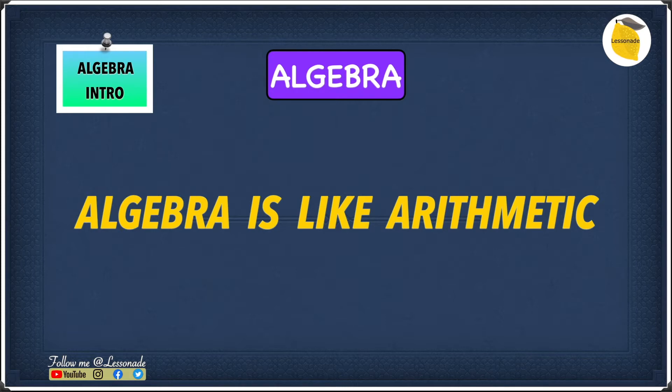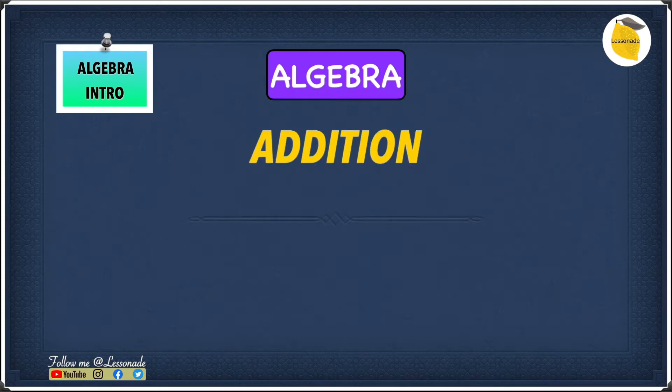So let's start with addition first. The example we have is x plus y. And as you could see, the way addition is written in algebra is very similar to how it is written in arithmetic. The only difference is in algebra you're dealing with symbols, but in arithmetic you're only dealing with numbers and no signs.